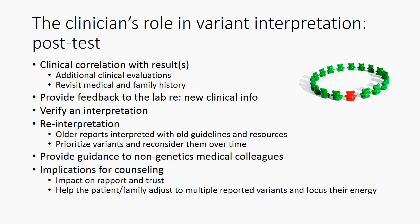The genetic professional's understanding of variant interpretation processes and resources can be very important in providing guidance to non-genetics colleagues and in counseling the patient or family. Translating the rationale for a variant's interpretation, particularly if it has changed, can help some patients adjust to new information and can positively impact rapport and trust. For patients with multiple reported variants, it can also help them understand why some variants are less concerning than others and allow them to focus their energy more effectively, especially if they want to join community genomic efforts or other research or support options.